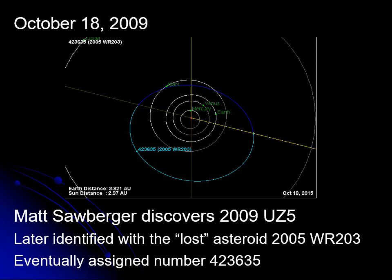About a year and a half later, another student, Matt Saulberger, was also searching for asteroids and found one temporarily designated 2009 UZ5. This asteroid was then studied for a bit, and it was eventually discovered that it was, in fact, another asteroid someone else had discovered in 2005 — renamed 2005 WR203, which was the original name. It had been lost, and Matt rediscovered it. They worked backwards on the orbit and confirmed it was the asteroid that had been found and lost. That's why these objects don't get names and numbers until they've been tracked for a while.